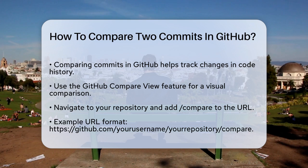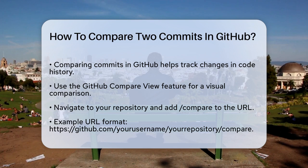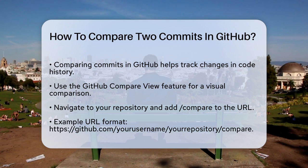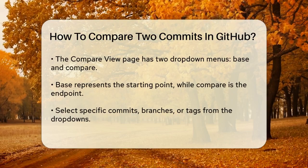To compare two commits, you can use the GitHub Compare View feature. Start by navigating to your repository on GitHub. Once you're there, you can manually go to the comparison page by adding 'compare' to your repository's URL. For example, if your repository is github.com/your-username/your-repository, you would go to github.com/your-username/your-repository/compare.